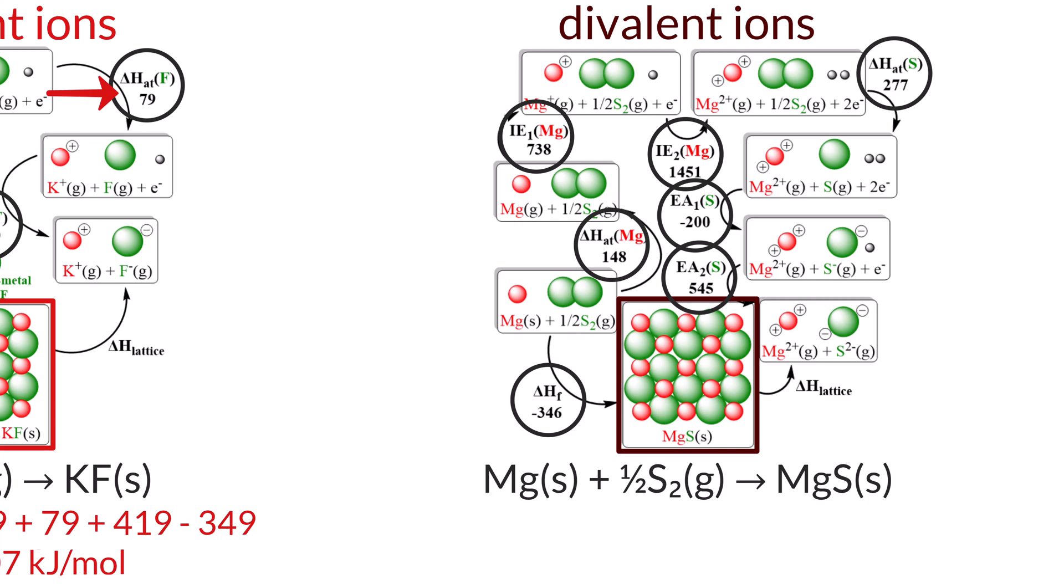Again, list out your known variables. Next, using the equation delta H sub lattice equals negative delta H sub F plus delta H sub AT of magnesium plus delta H sub AT of sulfur plus the sum of the ionization energies plus the sum of the electron affinities, you substitute your given values. Add everything up and you get 3,305 kJ per mole, thus the lattice energy of magnesium sulfide is 3,305 kJ per mole.